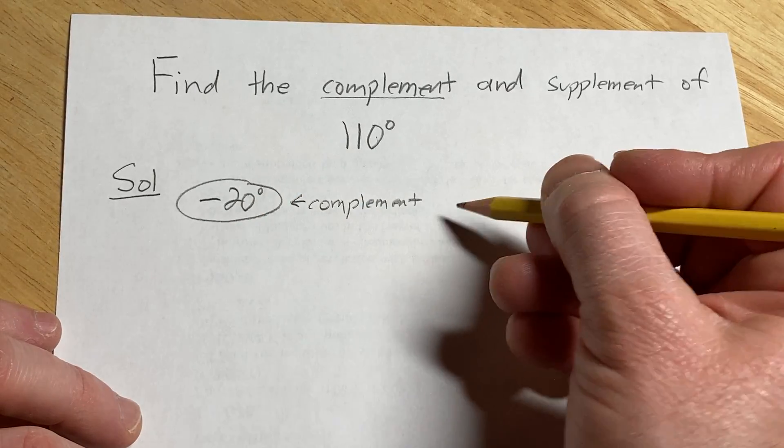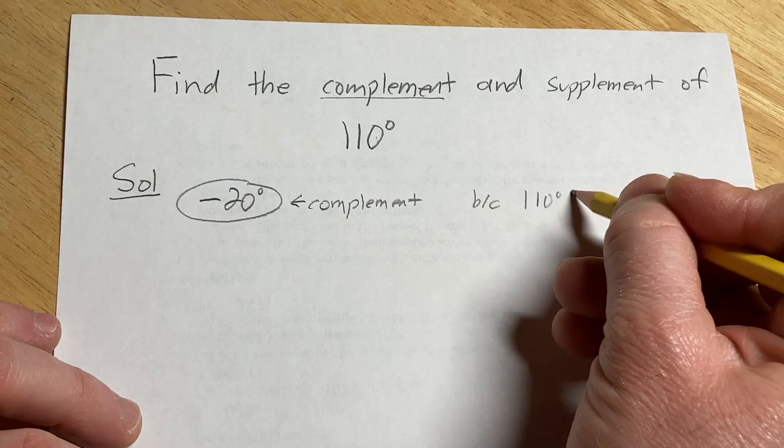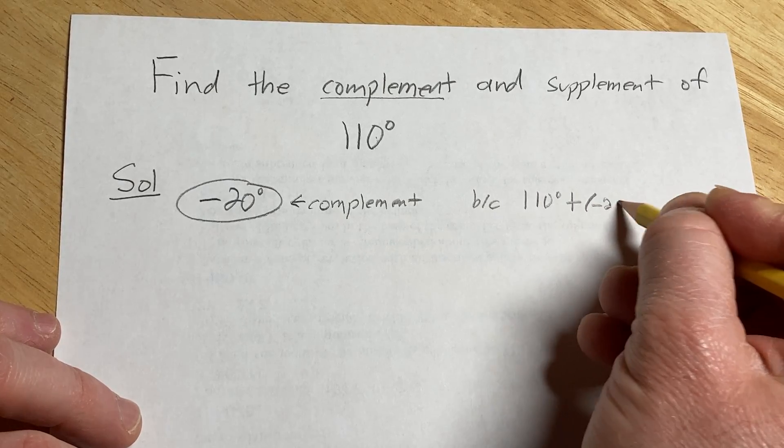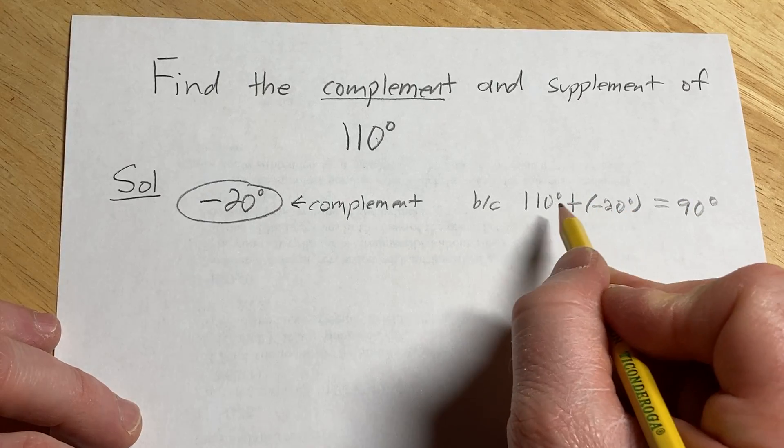And the reason is, if you're curious, it's because if you take 110 degrees and you add negative 20 degrees, you get 90 degrees. And that's what it means to be the complement of 110.